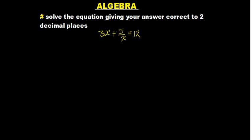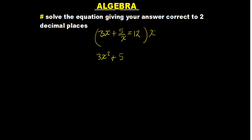What we do here is multiply everything by x. The x is on the denominator for the 5, so we are going to multiply everything throughout by x. So 3x multiplied by x gives us 3x squared, plus 5 over x multiplied by x gives us 5. Then 12 multiplied by x gives us 12x.